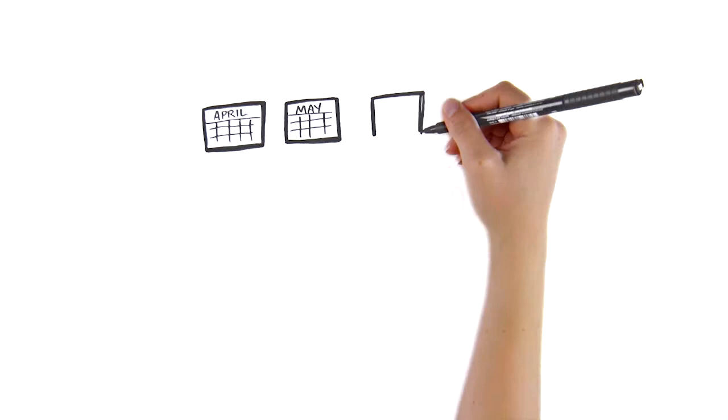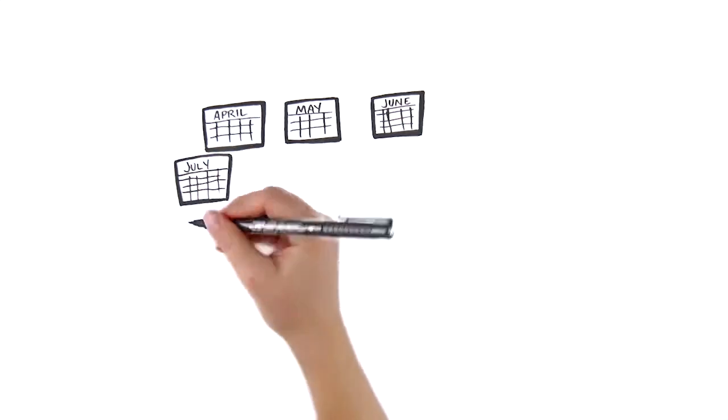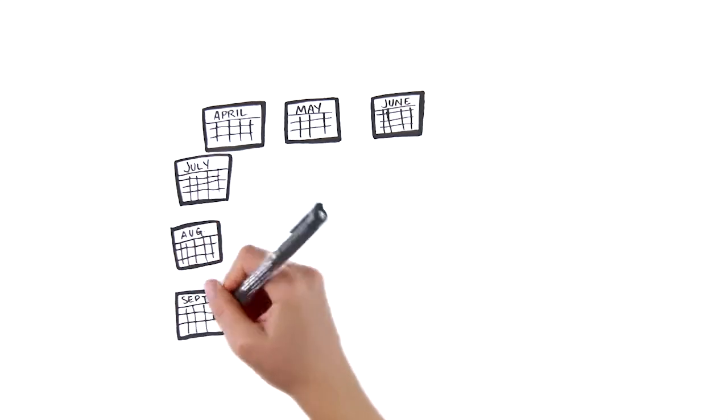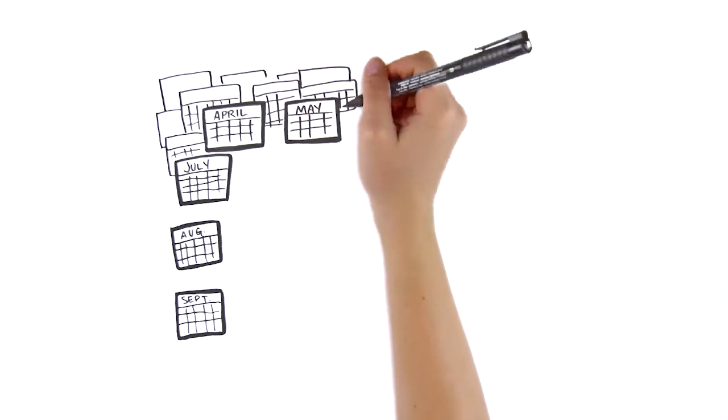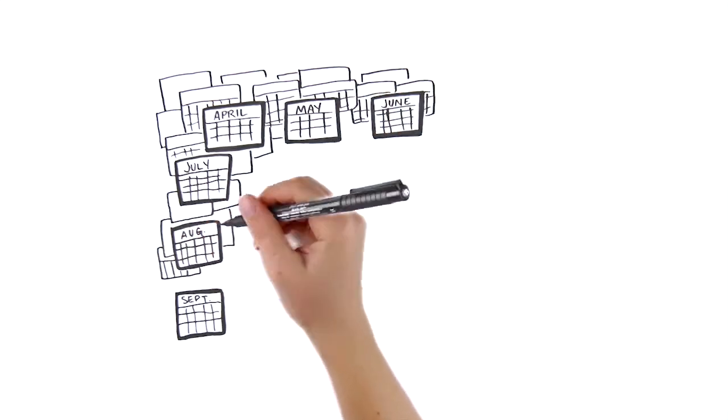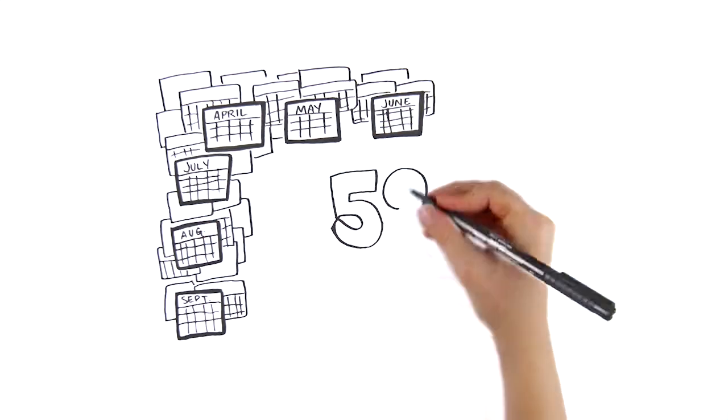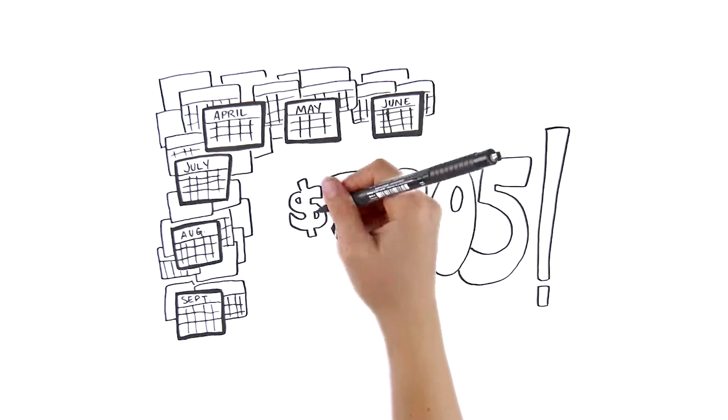For example, let's say you have $10,000 in credit card debt at 15% interest and are paying minimum payments of $200 a month. It will take you 79 months to pay that off and cost $5,805 in interest.